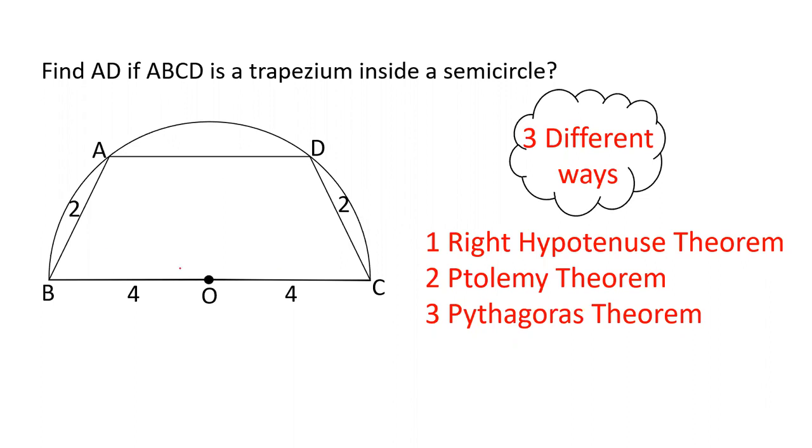The question is that ABCD is a trapezium. Trapezium has AD and BC as parallel lines. This is a semicircle inside. It has 4 vertices: B, C, D and A are the vertices. This semicircle has radius 4 plus 4. The sides AB and CD are both 2. We need to find AD. This is very easy to see, but how to do this?